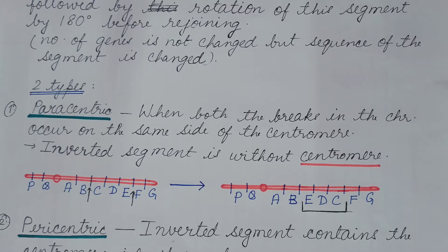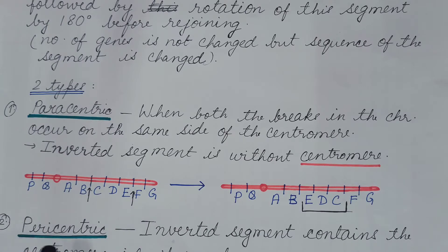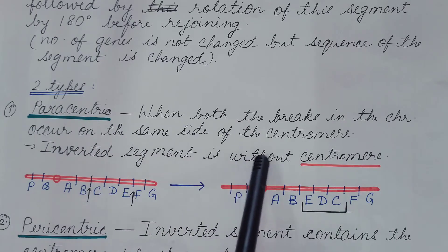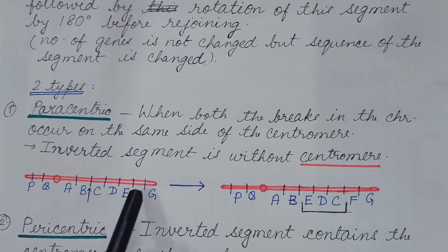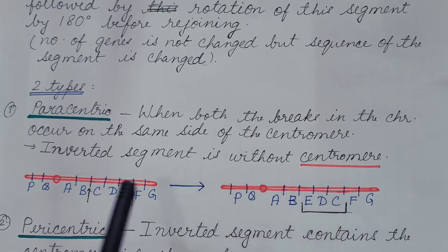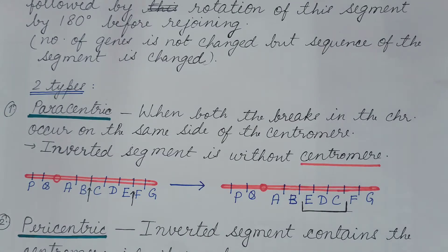Now the types of inversion. There are two types: paracentric and pericentric. In paracentric inversion, both breaks in the chromosome occur on the same side of the centromere, and the inverted segment is without the centromere. Both breaks are on the right side of the centromere, and the inverted segment does not include the centromere. This is known as paracentric inversion.